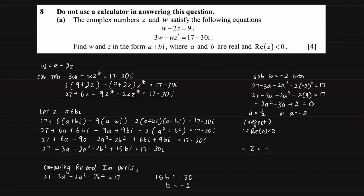So z equals -2 - 2i, and w equals 9 + 2(-2 - 2i), and this gives us 5 - 4i.